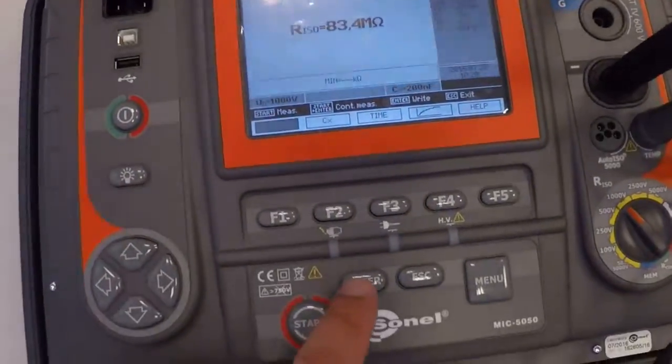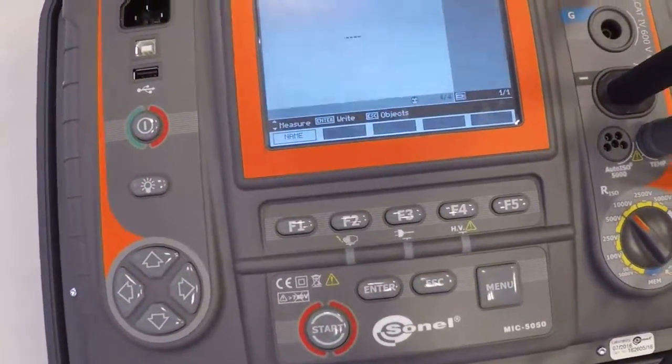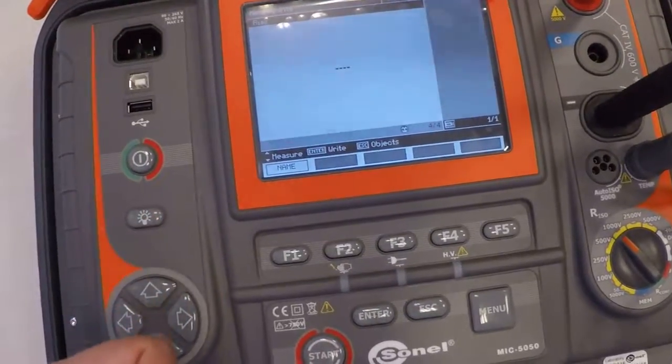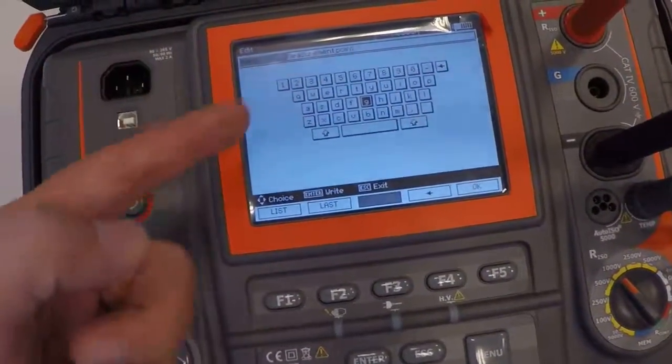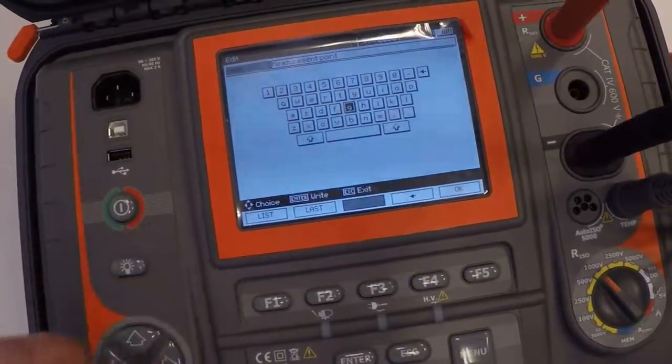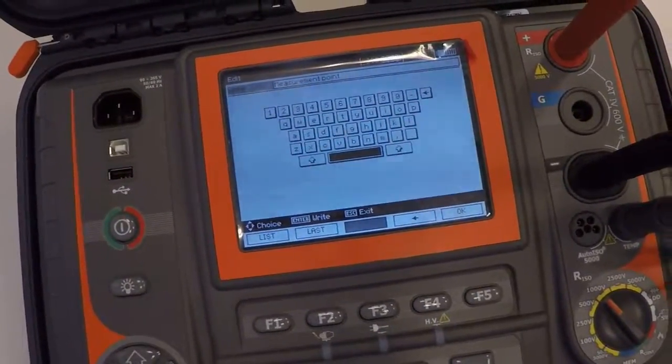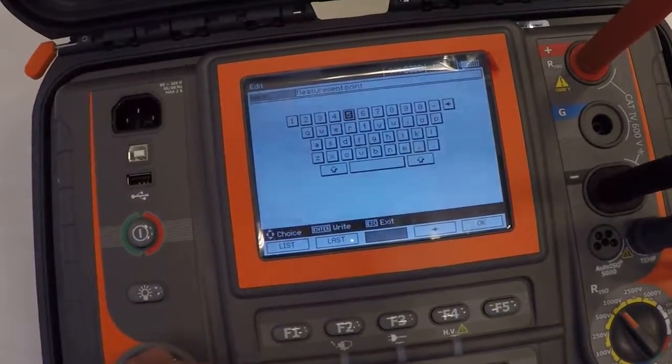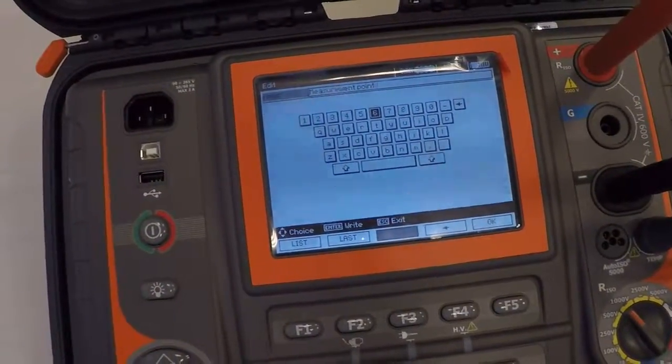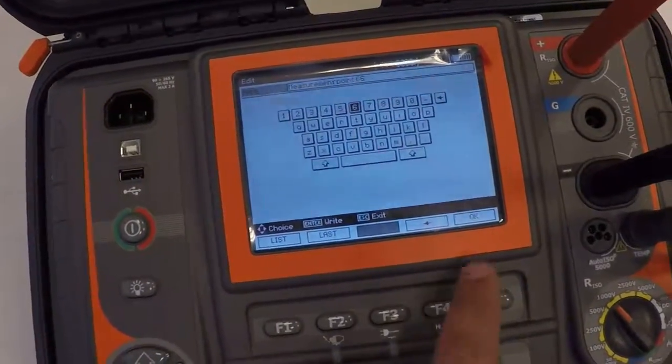Right now, by pressing enter, you can save and change the name. For example, measurement point 66, and press OK.